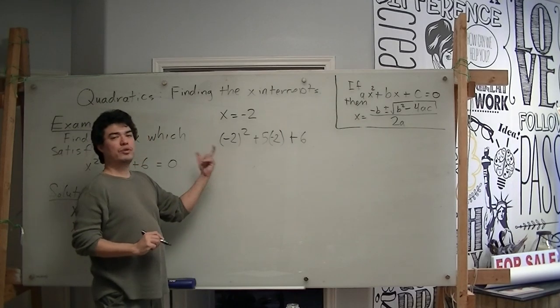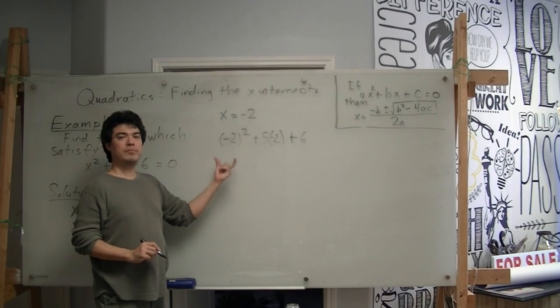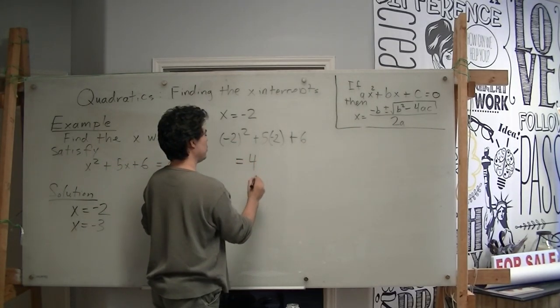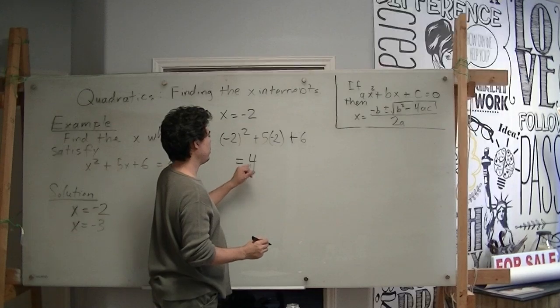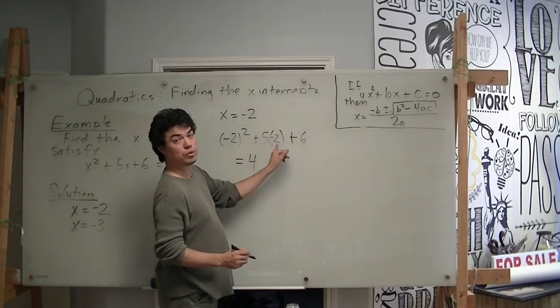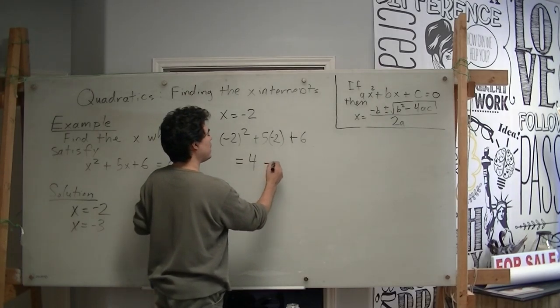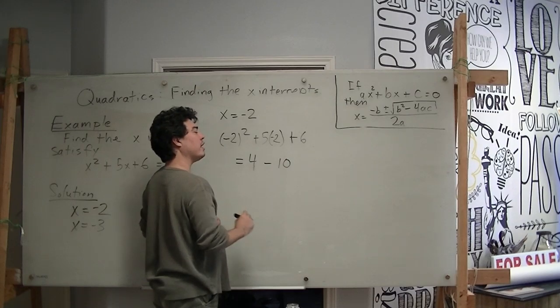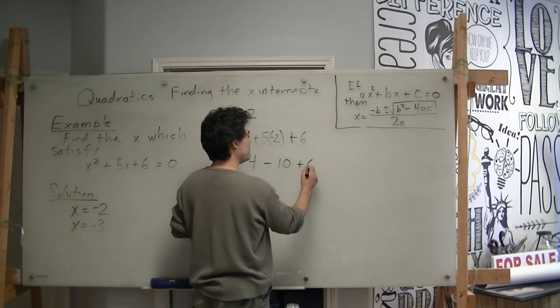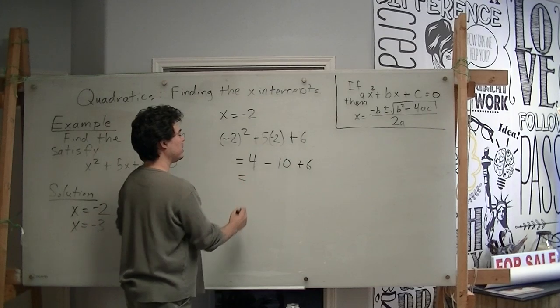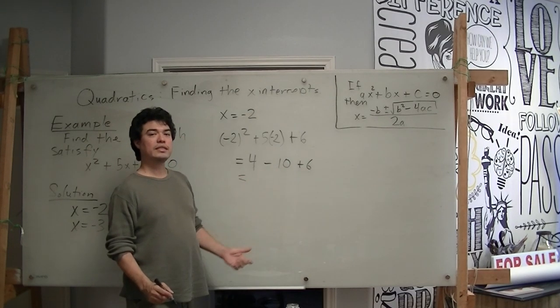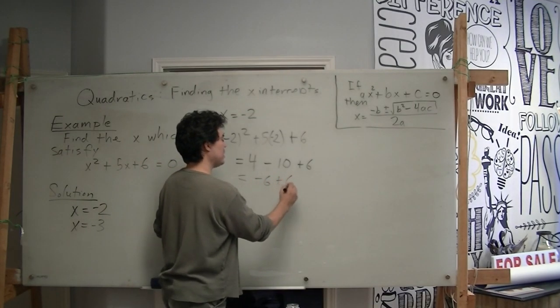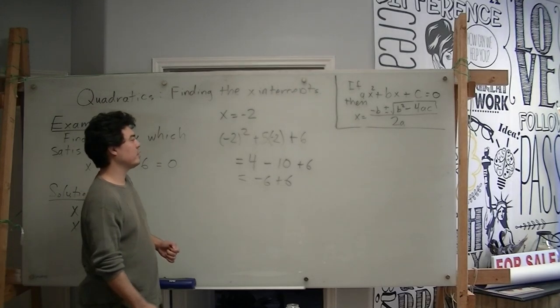Well, negative 2 squared is negative 2 times negative 2, which gives us a positive 4. Then we're adding 5 times negative 2. 5 times negative 2 is negative 10. So it'll be minus 10 because when we're adding a negative number, it's the same as subtracting. Finally, we're going to go plus 6. Now, if we look at this 4 minus 10, that is negative 6. So we get negative 6 plus 6. And of course, we can see here that this equals 0.